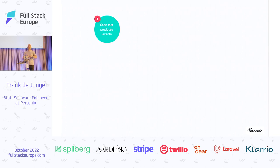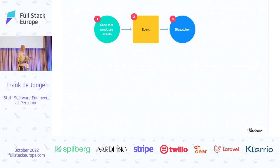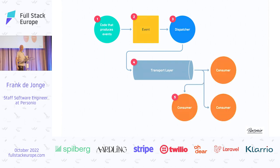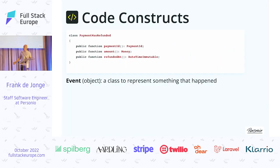What's an event system anyway? It is everything that you need to do in order to get some information from one place to another using events. This covers the code that produces the events, the event itself, the dispatcher, the transport layer, and the consumer. As the word system implies, it's multiple things inside of a constellation that all work to achieve one goal. Generally, an event is a class with some information inside the class that describes something — it represents something that has happened in a system or in a business context.